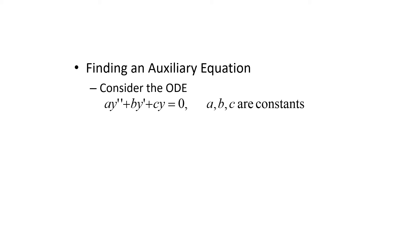So a, b, and c have to be constants for this to work out. We're going to assume that the solution takes the form y equals e to the mx. The reason for that is because if we take constant multiples of a function y and its derivatives, the only way that those can cancel each other out is if they're the same. The only function where the derivative takes the same form as the actual function is the exponential. So we're going to assume that y equals e to the mx.